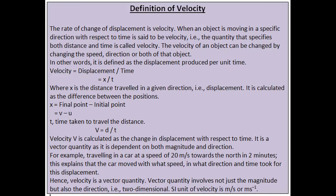The rate of change of displacement is velocity. When an object is moving in a specific direction with respect to time, it is said to have velocity — i.e., the quantity that specifies both distance and direction is called velocity. The velocity of an object can be changed by changing the speed, direction, or both of that object.